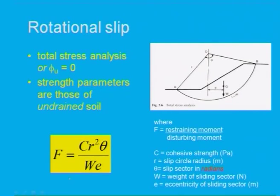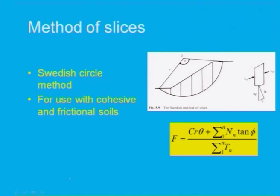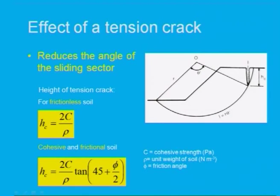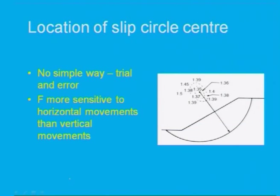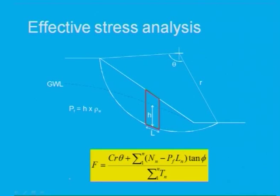Last lecture we finished rotational sleeve total stress analysis and for undrained conditions, factor of safety for resisting moment as well as disturbing moment was explained. Then the method of slices by the Swedish slip circle for cohesion as well as friction soils was discussed, along with the effect of tension crack on slope stability analysis. We also discussed how to find the location of the slip circle center, and effective stress analysis by method of slices.